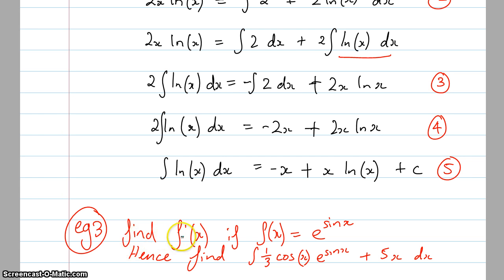So I'm asked this question: find f dash of x, find the derivative of this here, f(x) equals e to the sin x. And in doing so, hence find, so use the answer that you get for this to find the integration of one-third cos(x) e to the sin x plus 5x dx. So somehow this thing here that we're going to get will give us the answer to this bit here, which we wouldn't actually know how to do by hand.